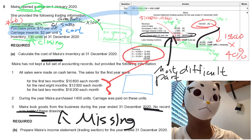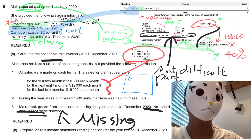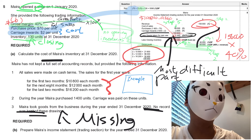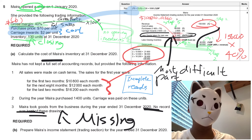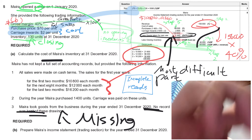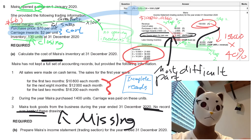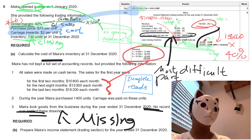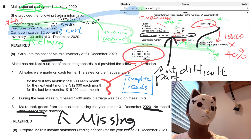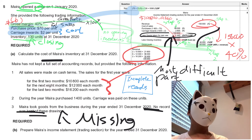This topic is in the chapter called 'Incomplete Records.' Usually, we have to find the gross profit and the cost of sales, then work backwards to find the missing figures.